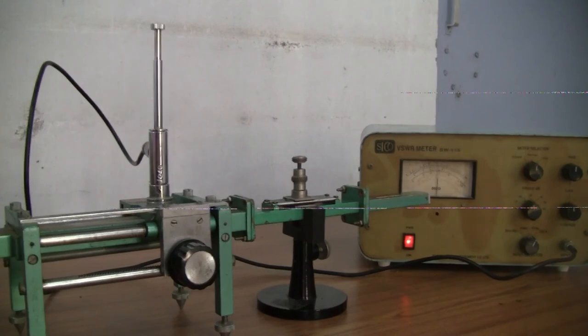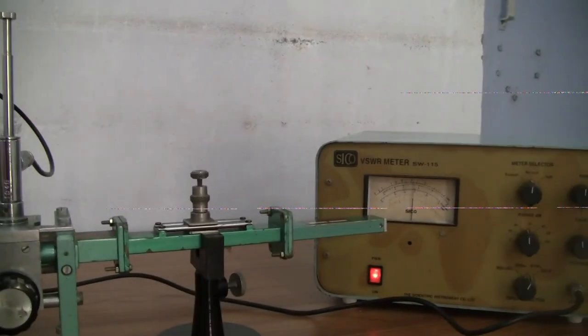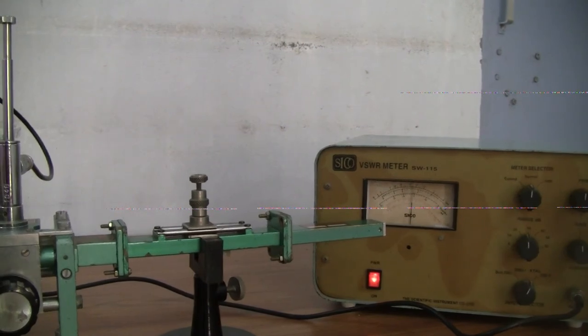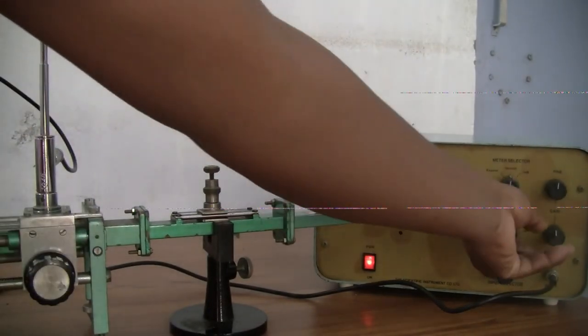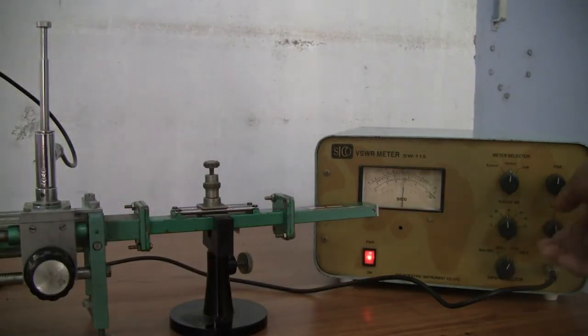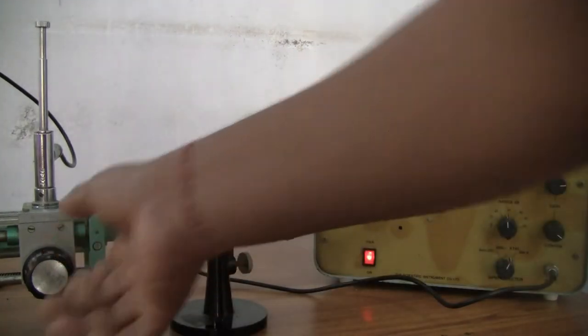Now coincide the pointer of VSWR meter with one in strobular scale. Now move the slotted line to minimum bar position and take the VSWR reading from the SWR scale. Also take the position value of minima shown in the scale attached to the slotted line.